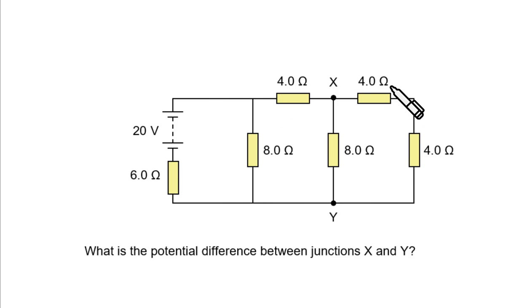So we have 4 ohms in series with 4 ohms, which can be simplified into an 8 ohm resistor. Now we have 8 ohms in parallel with 8 ohms, which can be simplified into a 4 ohm resistor.